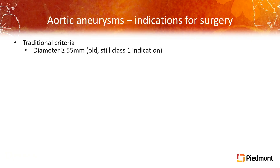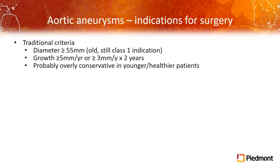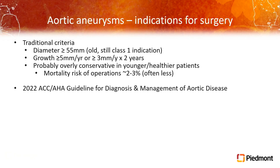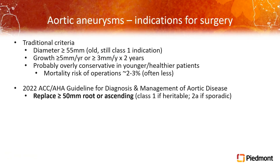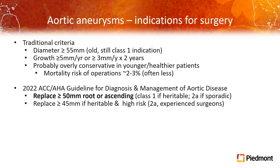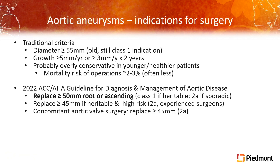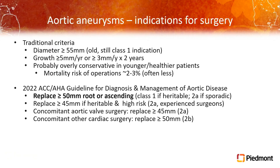Based on those and other data, the traditional standalone indication to replace the root or ascending aorta at 55 millimeters remains a class one indication, and rapid growth is also an indication. I would argue those two criteria may be overly conservative in younger and healthier patients, as the morbidity and mortality of elective operations is actually quite low. The 2022 ACC-AHA guideline now says aortas of 50 millimeters or more may be replaced as a standalone class one indication if heritable, or class 2A even if sporadic. The concomitant recommendation with aortic valve surgery is to replace it at 45 — even at experienced centers and even if it's tri-leaflet. The recommendation concomitant with other cardiac surgery is 50, though many of us would be uncomfortable leaving a 48 or 49 millimeter aorta in a healthy patient during a CABG.